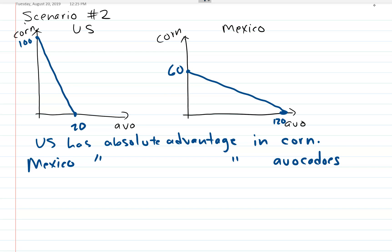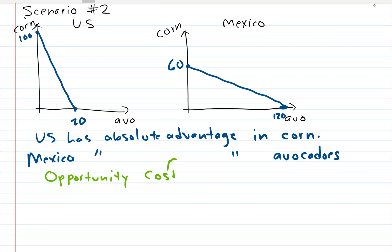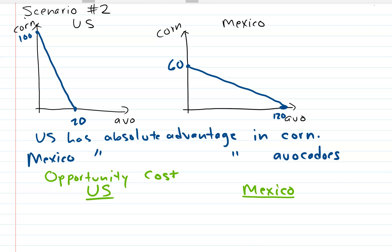The next thing we want to do is calculate opportunity cost. We've done these in other videos so you should be somewhat familiar with this. We're going to calculate the opportunity cost for each product in each country. Remember the opportunity cost is related to, but not exactly the same as, the slope of the PPF.